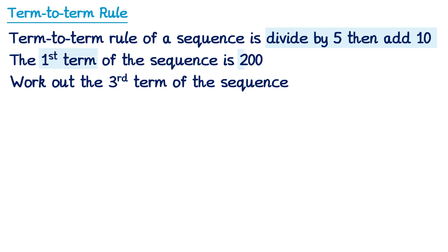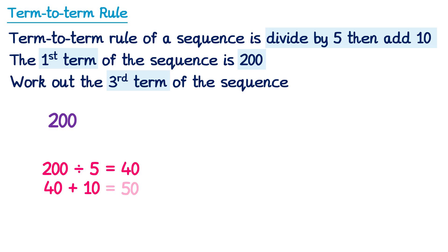We're told the first term is 200, so let's write that down, and we'll need to work out the third term. So we'll do the rule two more times. So let's start with 200, and then we need to divide it by 5 according to the term-to-term rule. 200 divided by 5 is 40. And then the term-to-term rule says add 10. So 40 add 10 is 50. So the second term is 50.